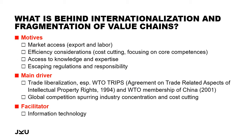To summarize, what is behind the fragmentation and internationalization of value chains? For firms, there are really four motives. The first is to gain market access — either to export markets or to labor markets where there's a sufficient pool of labor. Second, there are efficiency considerations: cutting production costs, or focusing on core competences while outsourcing everything else. The third motive is to gain access to knowledge and expertise available only in other locations. And a fourth motivation is often to escape existing regulations and partially to escape responsibility — for example, regarding labor force and basic labor regulations.